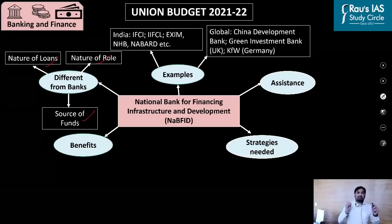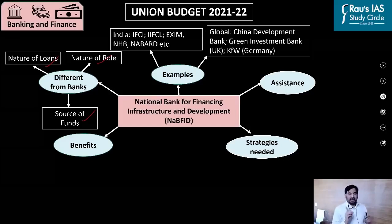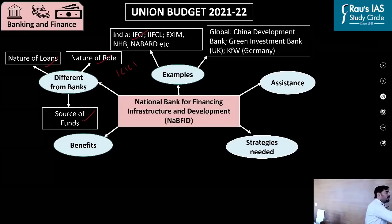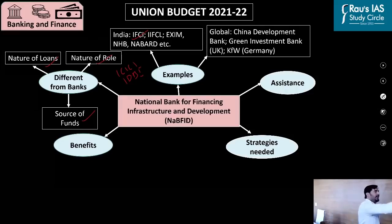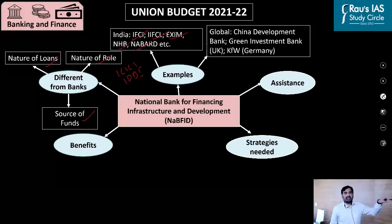This is not the first time India has set up a development bank. The first ever development bank in independent India was IFCI. In fact, present-day banks like ICICI and IDBI were once development banks but later turned into commercial banks based on the recommendations of the Narsiman Committee. Other development banks in India include IIFCL, Exim Bank, NHB, and NABARD — each specializing in a particular sector, like Exim Bank which specializes in giving loans for trade.